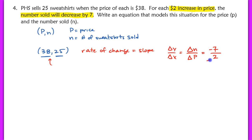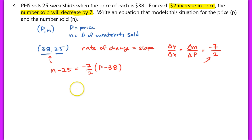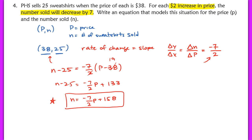We now have a point (38, 25) and slope negative 7/2, so we can write this in point-slope form: N minus 25 equals negative 7/2 times P minus 38. Converting to slope-intercept form by distributing and isolating N, we end up with N equals negative 7/2 P plus 158. In this form, you can plug in any price and find the number of sweatshirts sold. For word problems, slope-intercept form is easiest to use for follow-up questions.